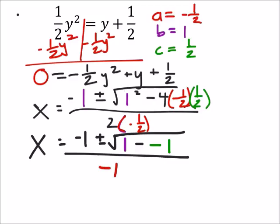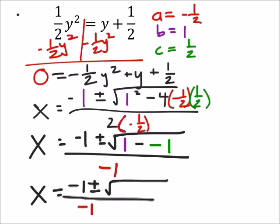And that's all over a negative one because here we had this two times negative one-half which is negative one. And then just working on the inside of this square root here, we would have to end up adding those two. So I end up with negative one plus or minus the square root of two all over negative one.